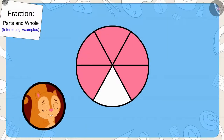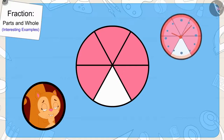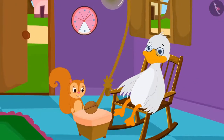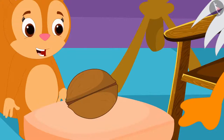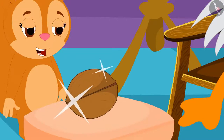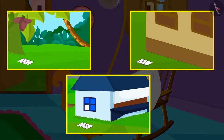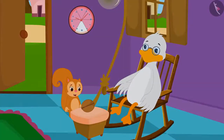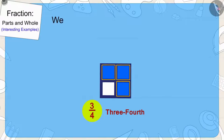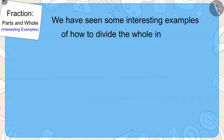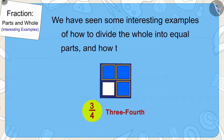Chanda remembered from the picture that she saw such a circle-shaped clock in Uncle's house. She immediately reached Barbole Uncle's house and there she found her most cherished gift. Actually, he had hidden all these clues to give Chanda a surprise. Children, in this lesson we have seen some interesting examples of how to divide the whole into equal parts and how to write it in fractions.